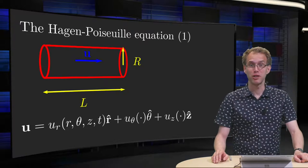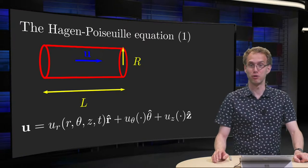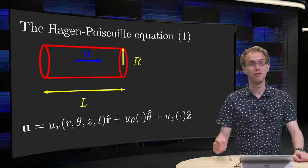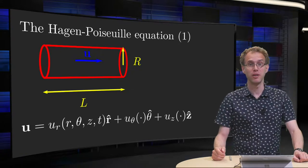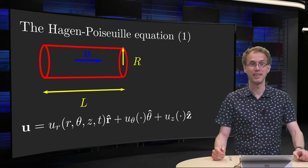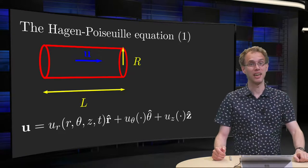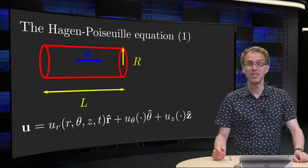You might think that the water flux is proportional to the area of the tube, and in that case the flux would be proportional to the radius of the tube squared. This is not the case. The flux increases even faster.